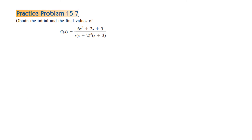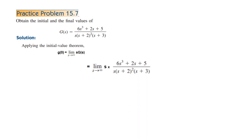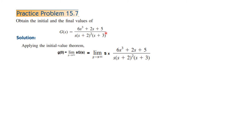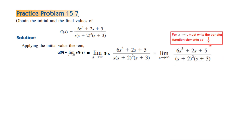Now we solve practice problem 15.7: obtain the initial and final values for the given G(s). Applying the Initial Value Theorem, G(0) equals limit S tends to infinity of S·G(s). After multiplying S by G(s), S and S cancel partially, leaving a simplified expression. We then apply the limit.